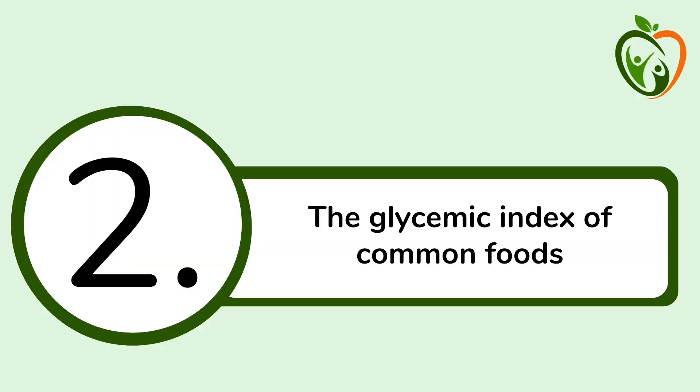Let's take a look at the glycemic index of a few foods. The glycemic index should not be understood as a ranking system of the health effects of a food — it's just a ranking system of the glycemic effects of a food, that is, how much a food raises blood sugar levels. It gives us information about one aspect of a food, and it doesn't mean that a food with a higher glycemic index is automatically less healthy.